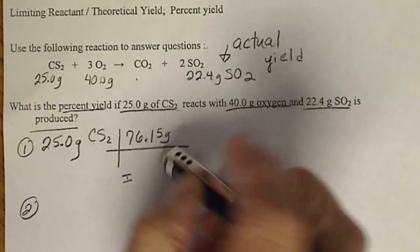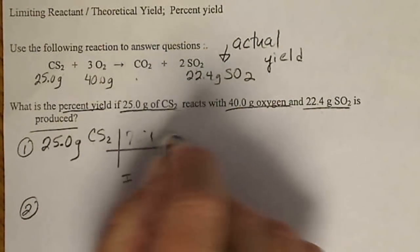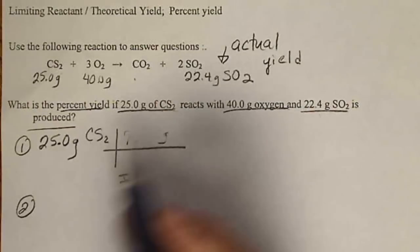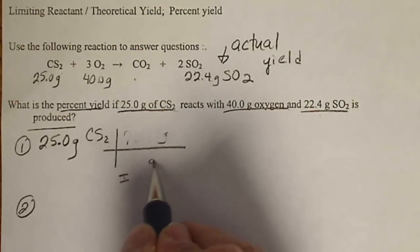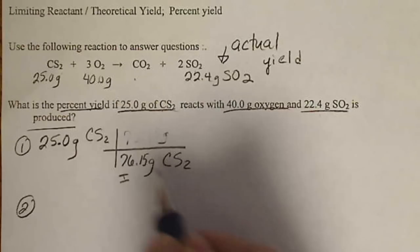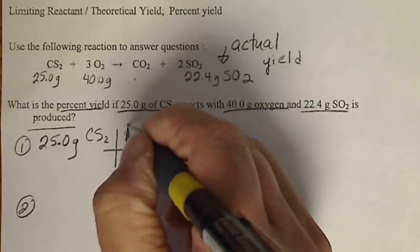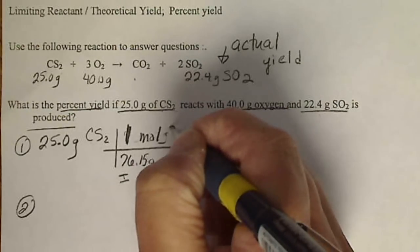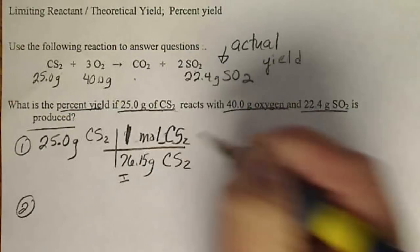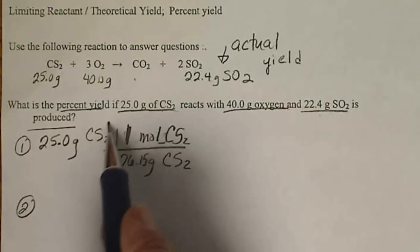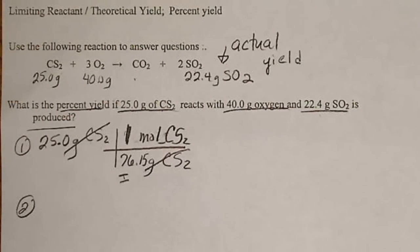I got it in the wrong place. I didn't do that on purpose, but the gram has to go down here. So we have grams of CS2, 76.15 grams of CS2 per 1 mole of CS2. I caught that because my grams have to cancel.